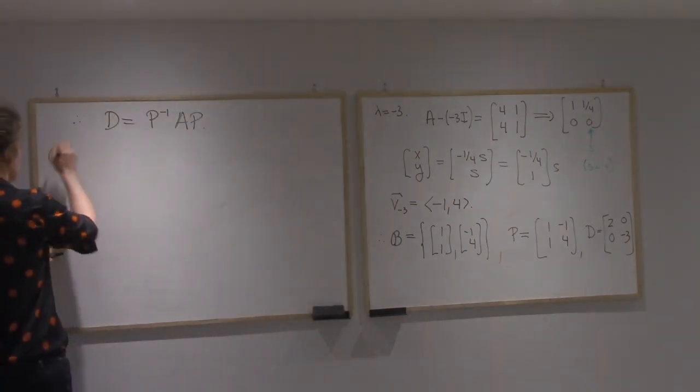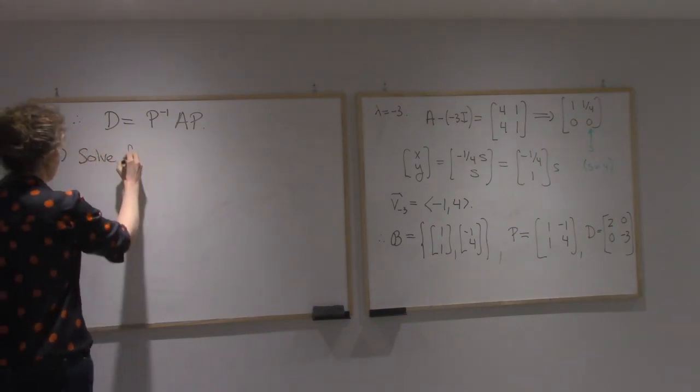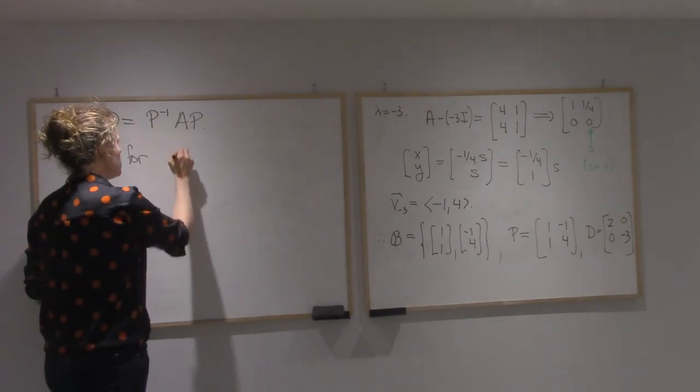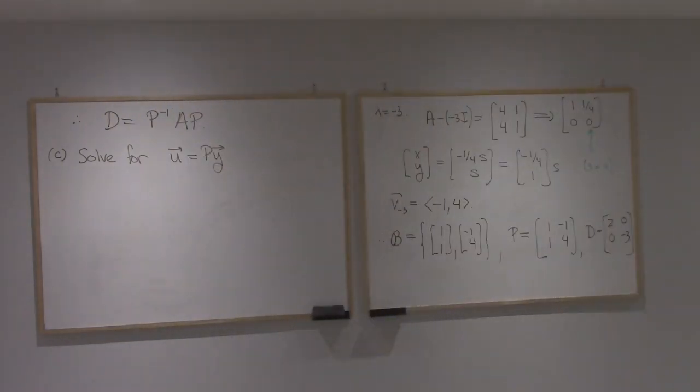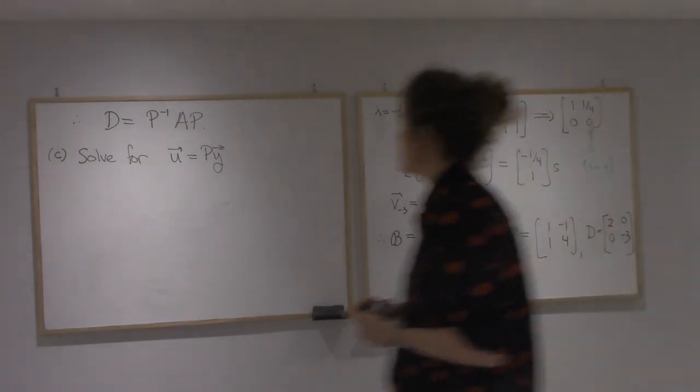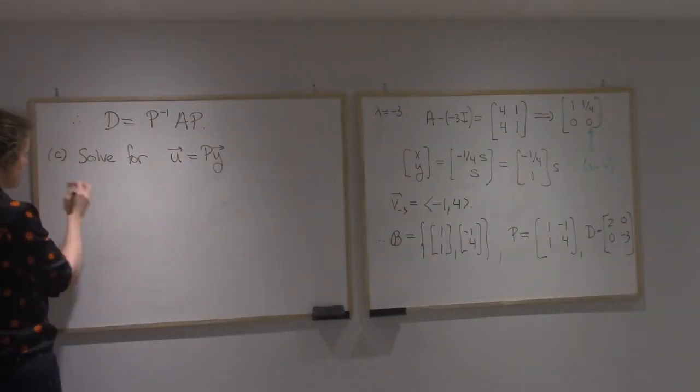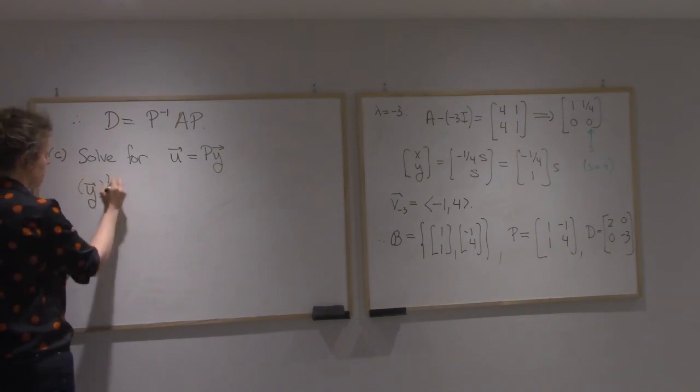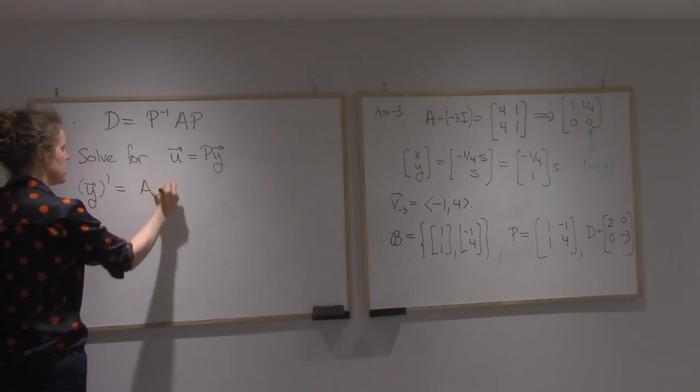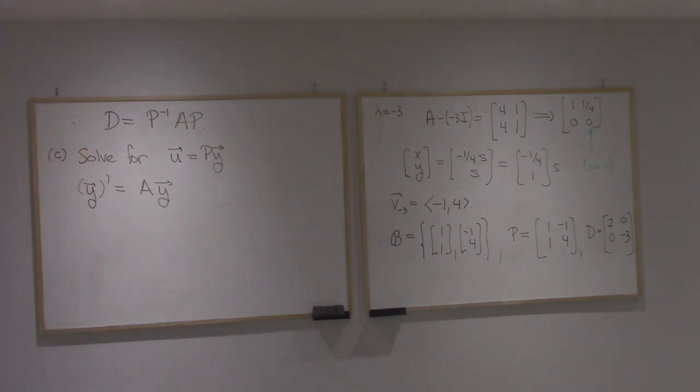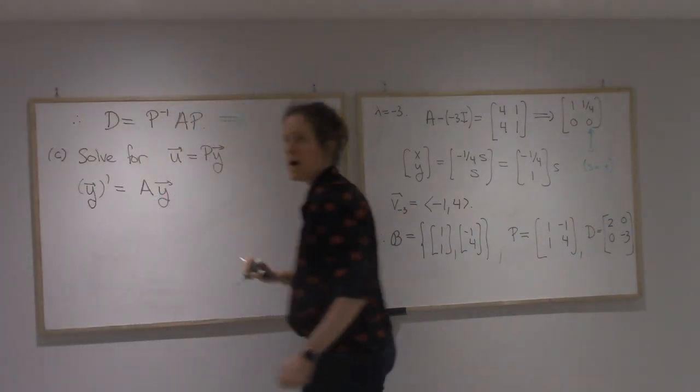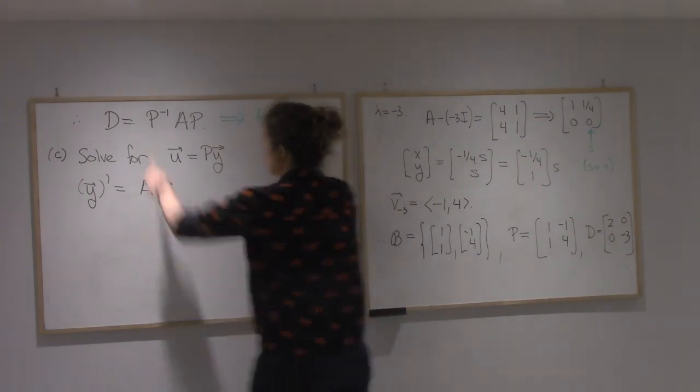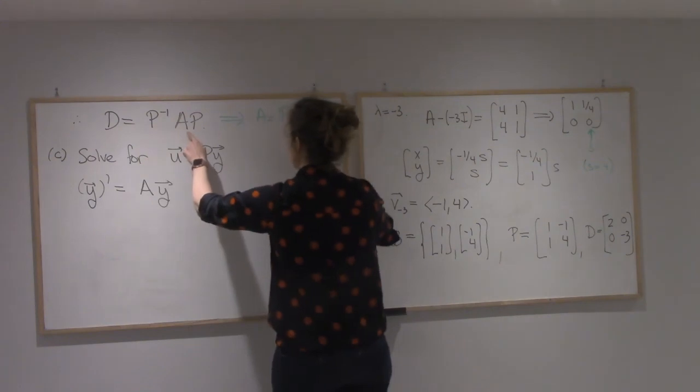So in part C, I had to solve for U, which was PY. Alright, so let's write back the original system. We had that Y prime was equal to AY. So now I want to go from this to a system about U. So in this, let me isolate A. A, I'll bring P inverse on that side, it's going to turn into P. I'll have D times P inverse.